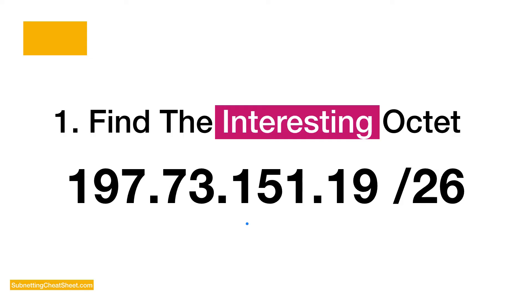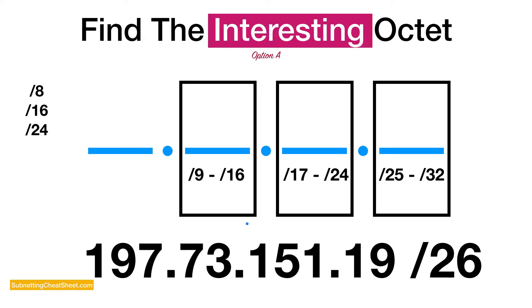To answer any subnetting question, you need three pieces of information. The first thing you need to know is how to find the interesting octet. When you're presented with an IP address, there are four different octets. You don't need to pay attention to all of them — you just need to figure out which one of the four you need to calculate.